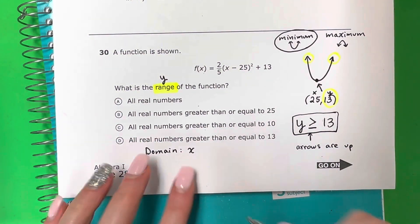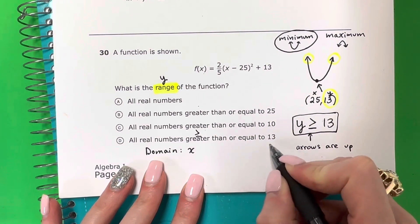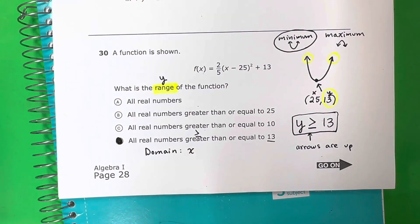So this one is my answer: all real numbers greater than or equal to 13. Perfect. My answer is D. Thank you so much for watching. If you like this video, please give it a like, leave a comment, and subscribe. See you next time.